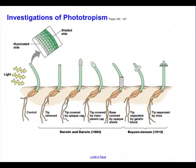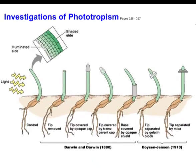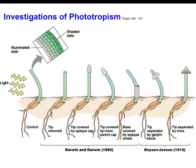A number of investigations were done on phototropism, some by Charles Darwin and his son, who continued his experiments later in 1880. Here we have another shoot growing and light comes at it from the side — so light is coming from the left — and what they noticed was under normal conditions with no experiment being done, this is the experimental control.